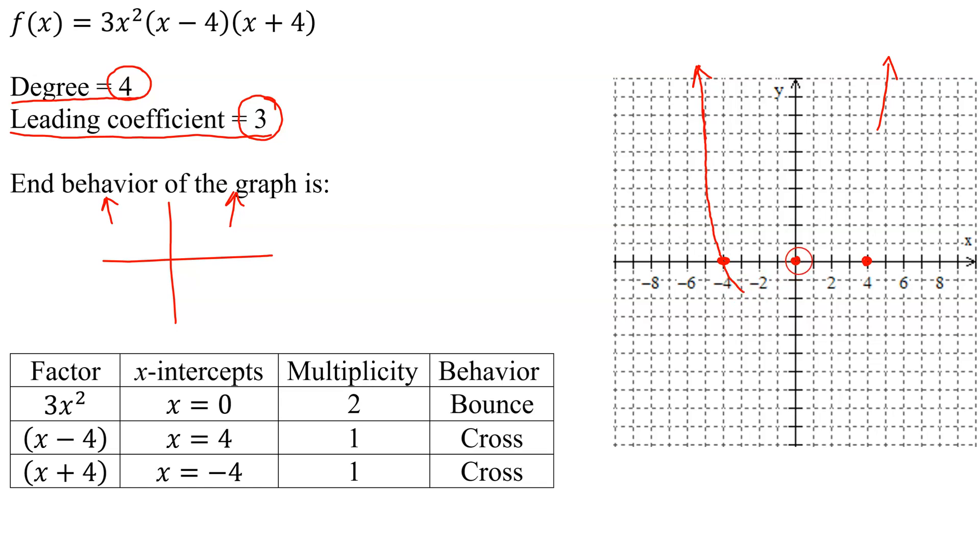Now at the next x-intercept of 0, what does it do? It's going to bounce. So it has to go up and bounce, but don't cross at x equals 0. How far does the graph go down here? I have no idea. That's what we need calculus for. So what I'm going to do is I'm just going to sketch it, coming down, going up, bouncing, and turning around.